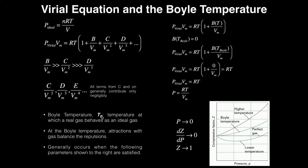For example, in the van der Waals equation of state, the attractions were accounted for by that A factor and repulsions by the B. Whenever we have an ideal gas, we completely neglect those attractions and repulsions because we assume no intermolecular interactions.